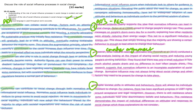Technical language is used effectively throughout the response and really helps to convey complex ideas clearly. Terms such as minority influence, obedience, and normative social influence are used accurately to discuss different aspects of social influence processes. The inclusion of specific research studies, including Nolan et al. and Foxcroft et al., adds real credibility to the evaluation and strengthens the arguments being made. Overall, the answer provides a well-structured and insightful discussion on the role of social influence processes in social change, effectively addressing both the description and evaluation components using relevant examples and research evidence.